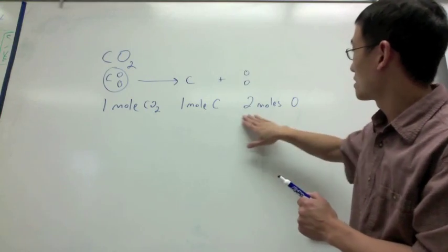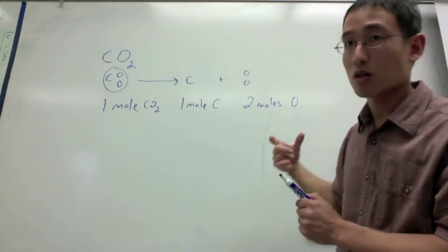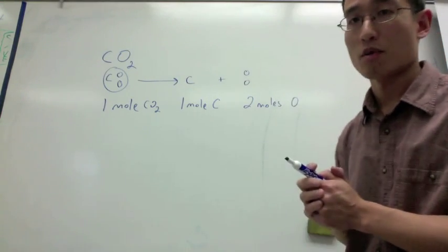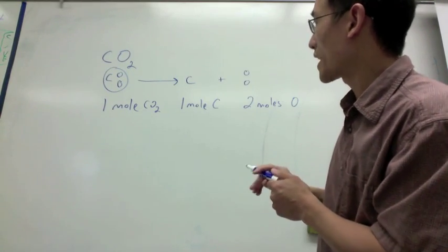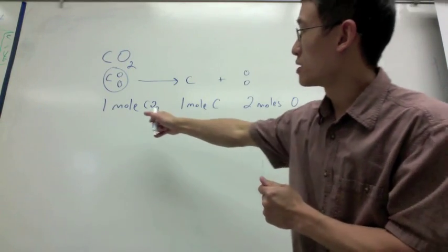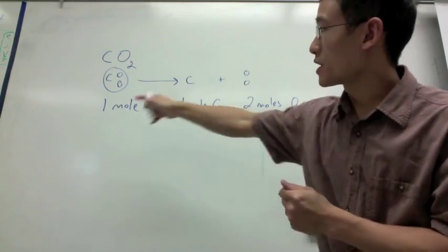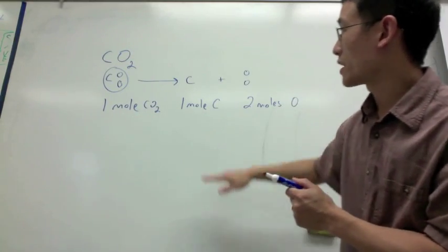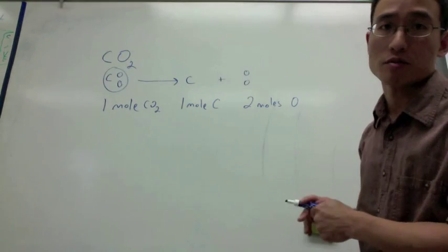Now, this is oxygen atoms, not oxygen the molecule. So, I can say the relationship between all these things here, for every mole of carbon dioxide, you have a mole of carbon, two moles of oxygen. So, let's say I have a problem now.